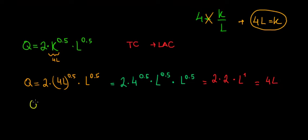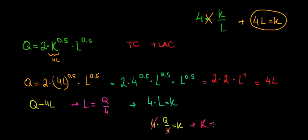If quantity equals 4L, we could write that L is a function of Q divided by 4. Now how can we express capital in terms of quantity? We know that 4L equals K, so 4 times L equals K. If we express L in terms of quantity, we have 4 times Q over 4 equals K. If we cancel out 4 by 4, capital is going to be equal to Q.